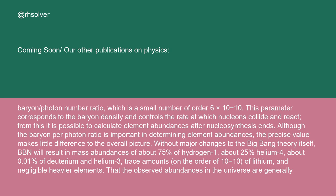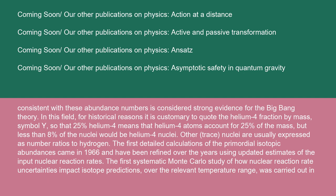That the observed abundances in the universe are generally consistent with these abundance numbers is considered strong evidence for the Big Bang theory. In this field, for historical reasons, it is customary to quote the helium-4 fraction by mass, symbol Y, so that 25% helium-4 means that helium-4 atoms account for 25% of the mass, but less than 8% of the nuclei would be helium-4 nuclei. Other trace nuclei are usually expressed as number ratios to hydrogen.